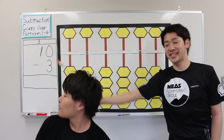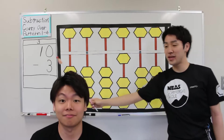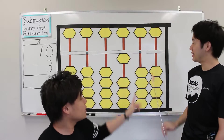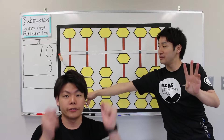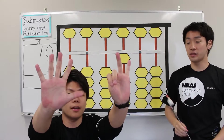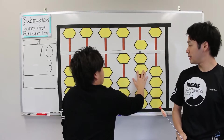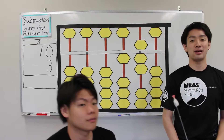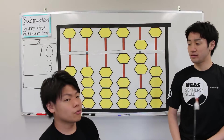Next question. First, plus 10. Then, minus 3. What is the answer? 10 minus 3 equals 7. The number shows 17, but the correct answer is 7. Subtract 10. That's right.